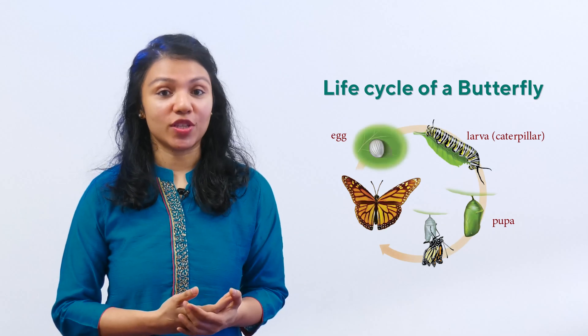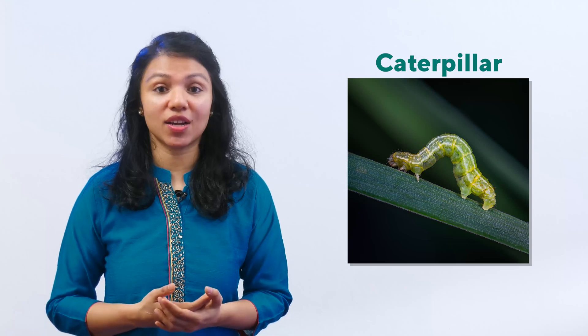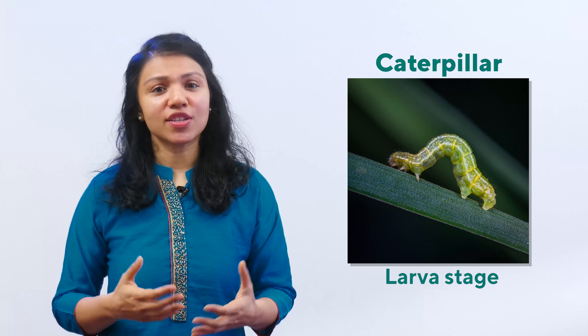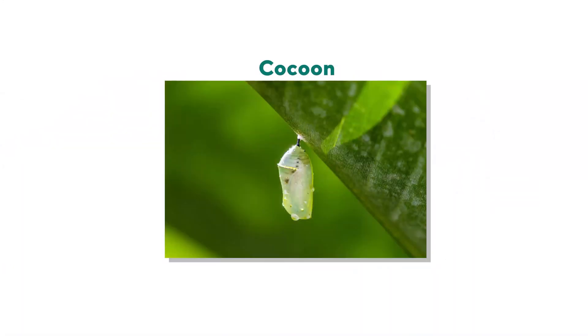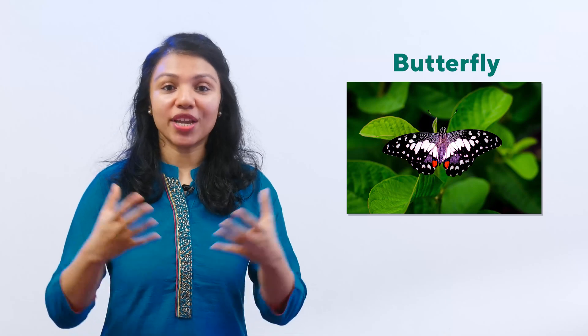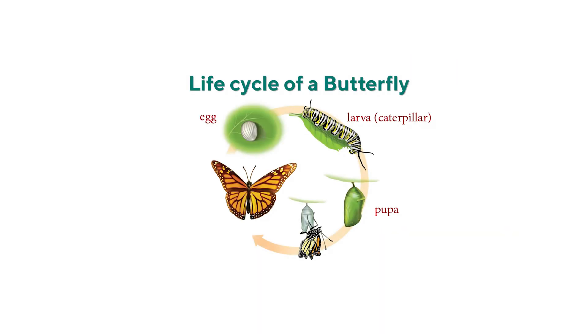Insects like butterflies, cockroaches, and ants also lay eggs. This is how the life cycle of a butterfly looks. The butterflies lay their eggs on the leaves. When the eggs hatch, the babies look like caterpillars. This stage is called the larva stage. Caterpillars are forever hungry — they keep eating and gaining weight, getting rounder and rounder. After a while, they spin a protective cover called a cocoon. This is called the pupa stage. After the pupa stage, the caterpillar turns into a butterfly and breaks open the cocoon. This process is called metamorphosis.